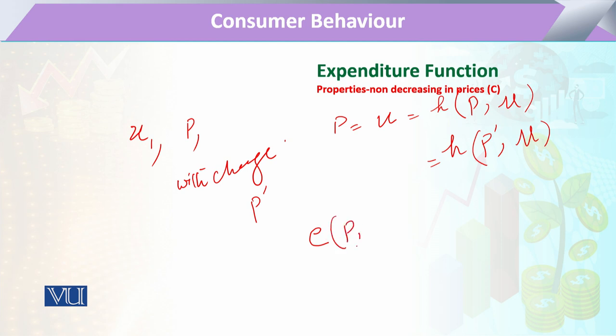To that is related to jo uski pehli utility hai, and that is equal to p into x. Aur jo second expenditure hai wo hamare paas aayega p prime and with the given utility, and this is the p prime into x. Ab agar in dono ke darmiyan agar hum aspect lagayen, to chunke yeh wali price jisko humne kaha ke p prime dot x.